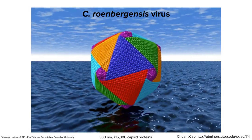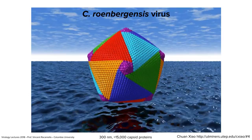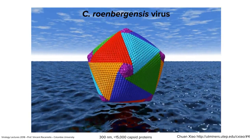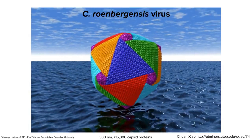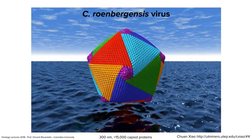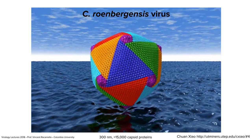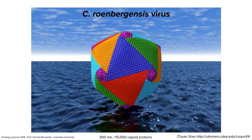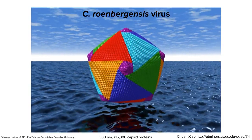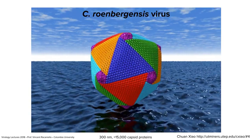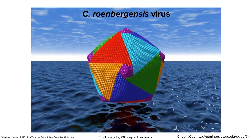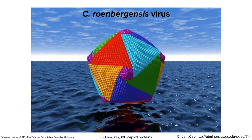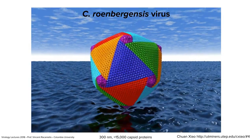We can even solve structures of giant viruses. This is Cafeteria rohenbergensis virus, one of the giant viruses discovered a number of years ago. It infects a flagellated eukaryote called Cafeteria rohenbergensis that lives in the ocean. The structure was solved by Chun Xiao at UTEP — he says he can't fully manipulate it because it crashes his computer. This particle is 300 nanometers in diameter, 10 times more than polio, and has over 15,000 capsid proteins.